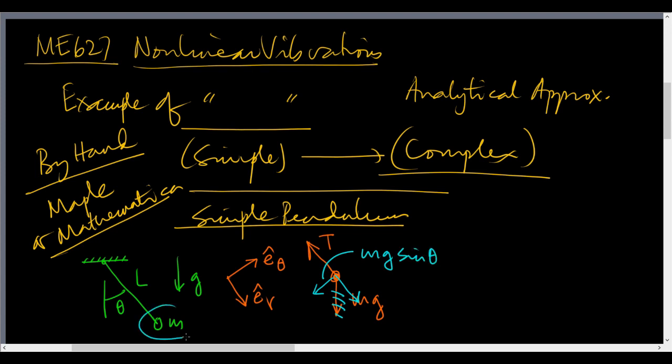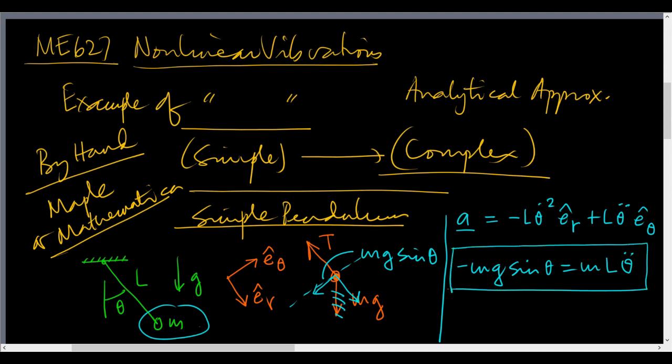The acceleration of this mass is equal to minus l theta dot squared e_r plus l theta double dot e_theta. Therefore, linear momentum balance says minus mg sin theta equals m l theta double dot. This is the equation of motion for a simple pendulum and you can see that the mass cancels out. So we have theta double dot plus g over l sin theta equals 0.